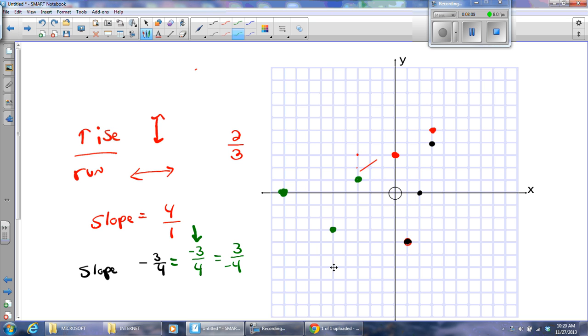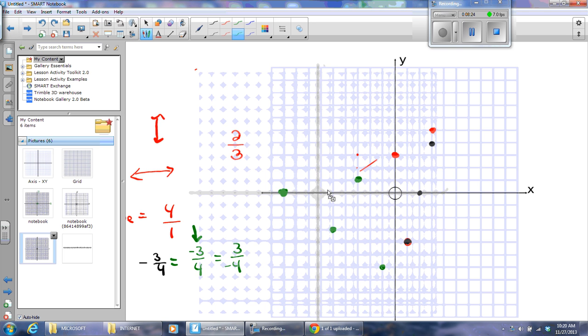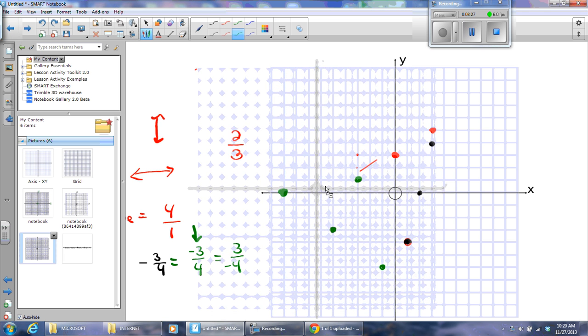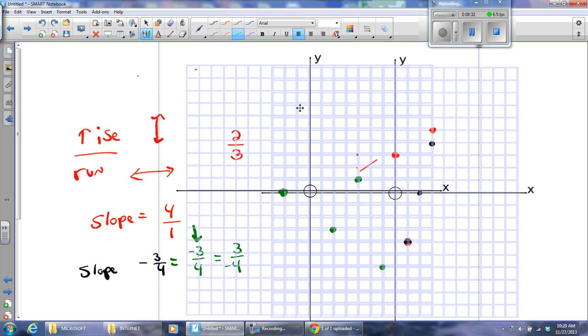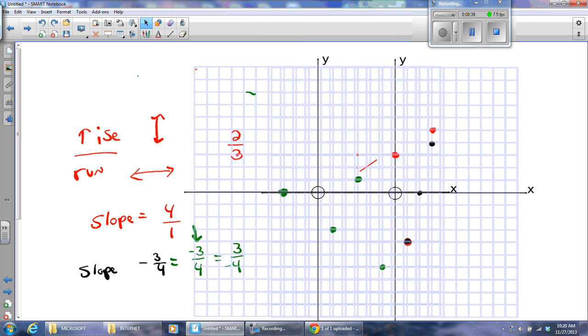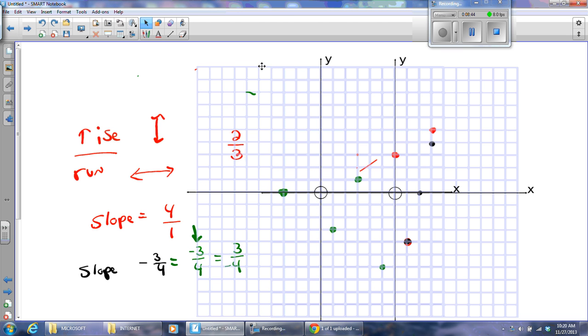So, watch what happens. I'll do negative three. I'll go one, two, three down, then one, two, three, four to the right. One, two, three down. One, two, three, four to the right. There you go.